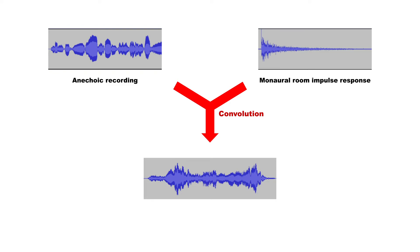If we convolve the anechoic recording with a monaural impulse response, then the anechoic recording inherits the acoustics of the room, most notably the reverberation time and the frequency response.